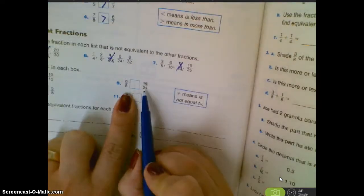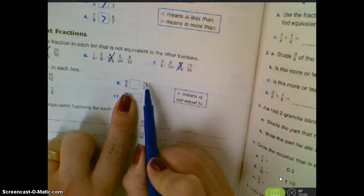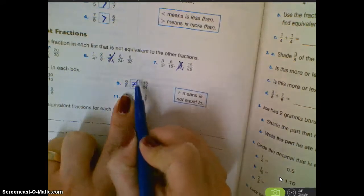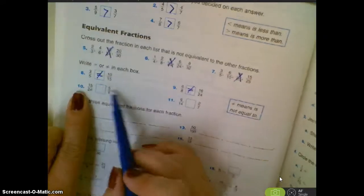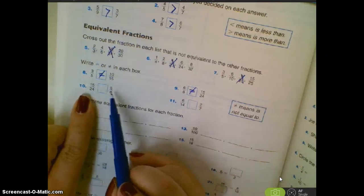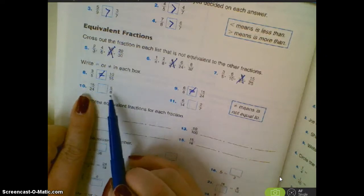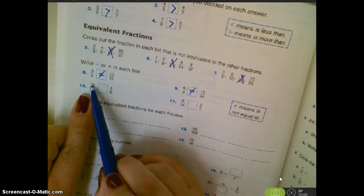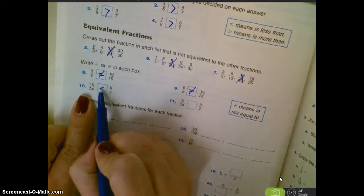And eight times three is 24. Six times three is not 16. They are not equal. I'm dividing now. 24 divided by three is 8. 15 divided by three is 5. So yes, these are equal.